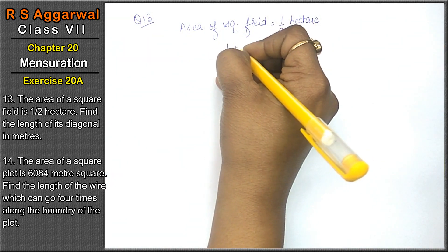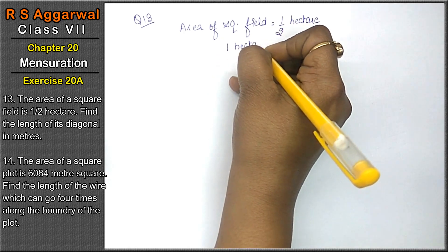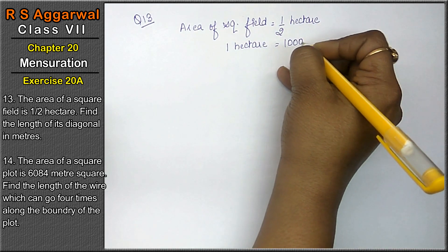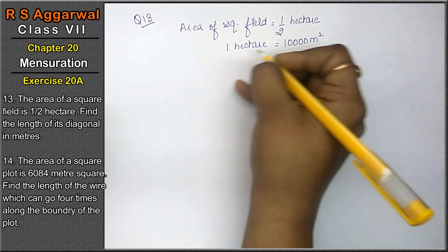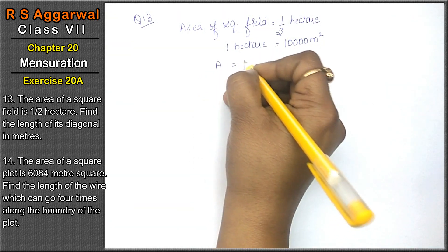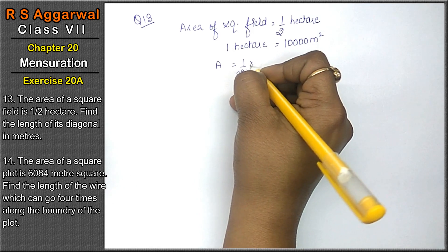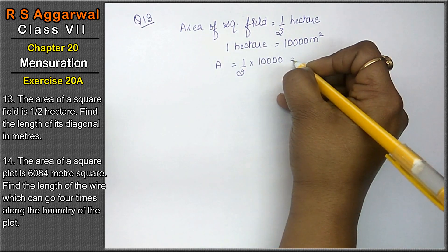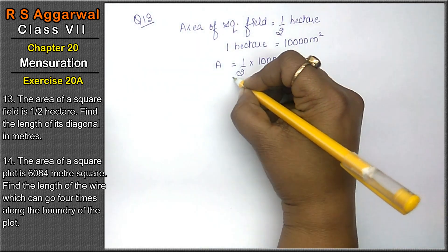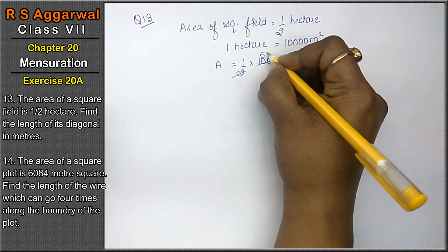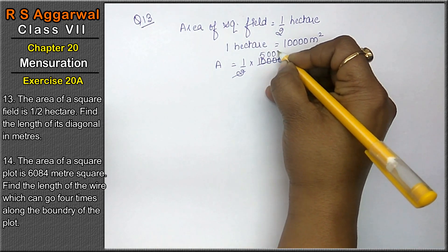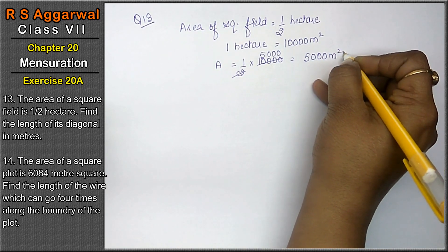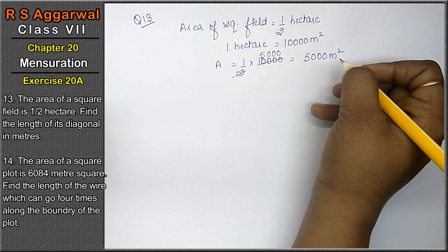1 hectare में 10,000 meter square होते हैं. तो area कितना आया? 1/2 of 10,000 = 5,000 meter square. So 5,000 meter square is the area of the square field.